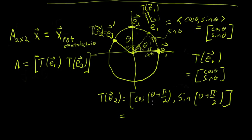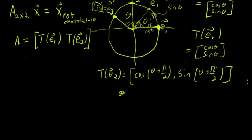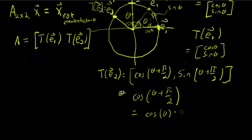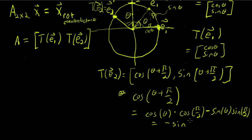Hopefully you remember from your sum and difference identities for cosine and sine that these two expressions can be rewritten. Let's rewrite cosine of theta plus pi over 2. This is of the form cosine(A + B), which equals cosine(A)cosine(B) minus sine(A)sine(B). So that's cosine(theta)cosine(pi/2) minus sine(theta)sine(pi/2). Cosine of pi over 2 is zero, so the first term drops out. Sine of pi over 2 is 1, so we get negative sine theta.